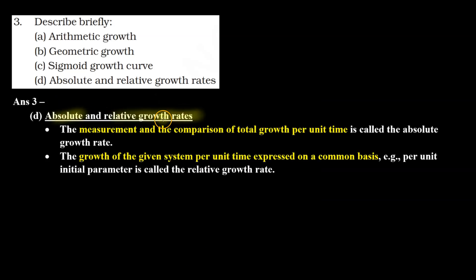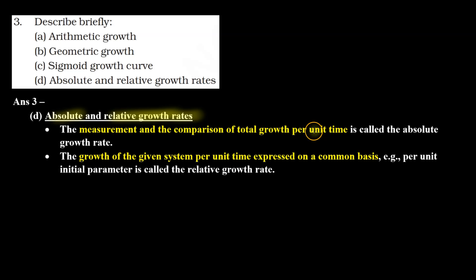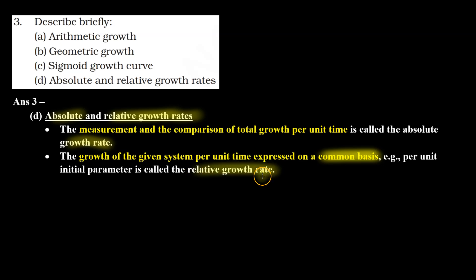D part — absolute and relative growth rates. The measurement and comparison of total growth per unit time is called the absolute growth rate. The growth of a given system per unit time, expressed on a common basis — for example, per unit initial parameter — is called the relative growth rate. So when we compare growth rates on a common basis, we call it the relative growth rate.